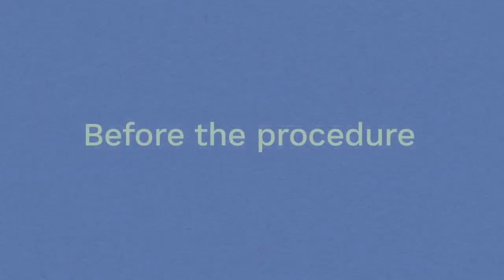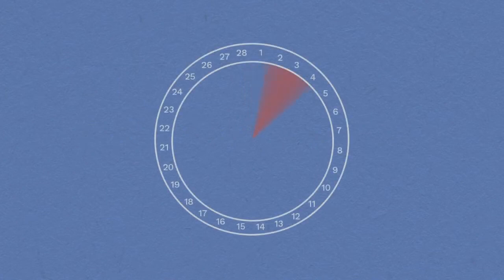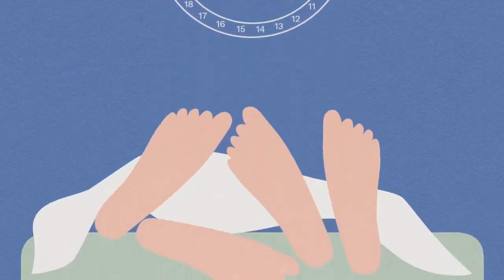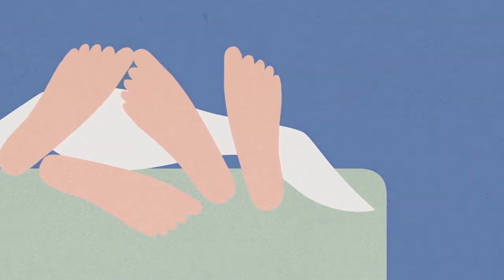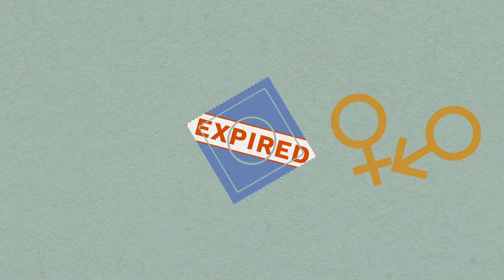Before the procedure. Both types can be fitted at any point in your cycle, provided there's no chance you could be pregnant. We ask that you don't have unprotected sex for at least 3 weeks before fitting. This includes sex when your method of contraception has passed its expiry date, or using withdrawal or natural methods of contraception.